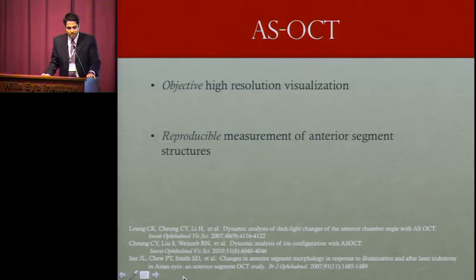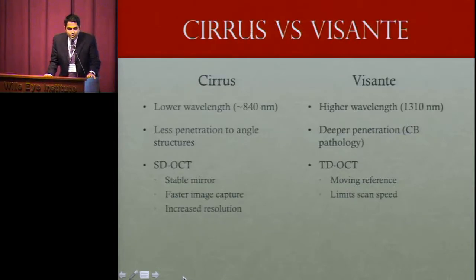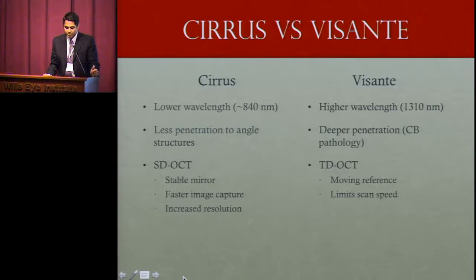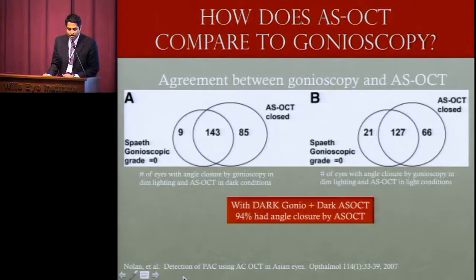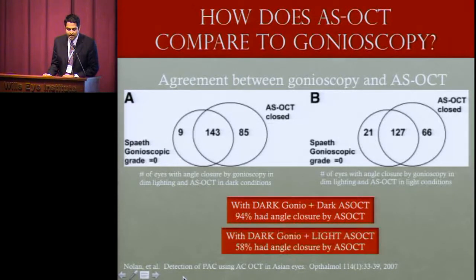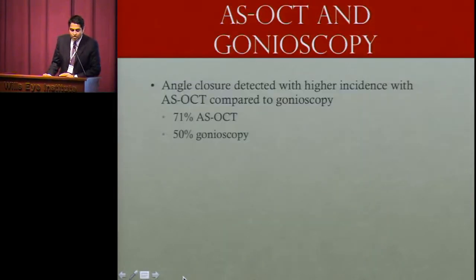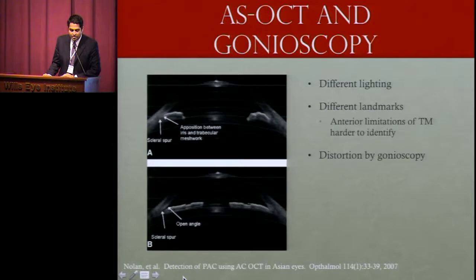OCT is objective with high-resolution visualization and reproducible anterior segment parameters, as demonstrated in a number of studies. The two imaging modalities we looked at were the Cirrus and the Visante. The Visante has a higher wavelength, thought to provide deeper penetration into ciliary body structures. Under dark-room conditions, 94% of people were diagnosed with angle closure by ASOCT. Angle closure detection was also higher with ASOCT compared to gonioscopy: 71% versus 50% in one study.